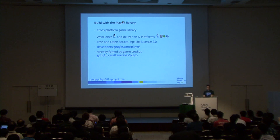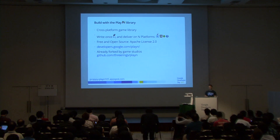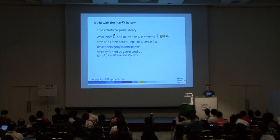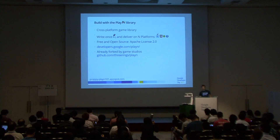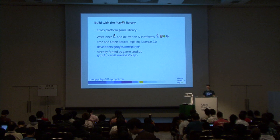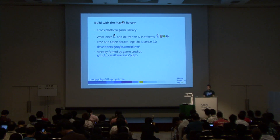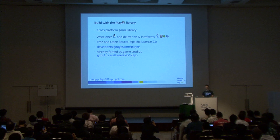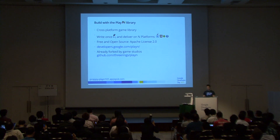There is a website called developer.google.com where we host all Google-related projects, and you can find more information about PlayN there. It's already used by game studios like Rock Show for Angry Birds, and other game studios have already forked it on GitHub — for example, a developer called FreeRings is making modifications to PlayN.